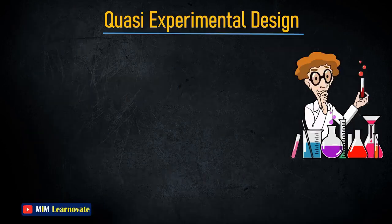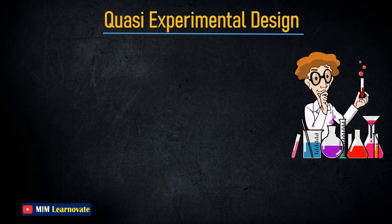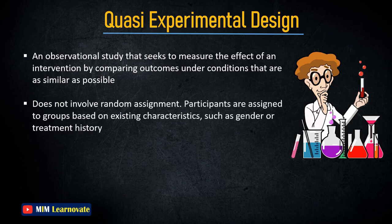What is a Quasi-Experimental Design? A quasi-experiment is an observational study that seeks to measure the effect of an intervention by comparing outcomes under conditions that are as similar as possible. A Quasi-Experimental Design does not involve random assignment. Instead, participants are assigned to groups based on existing characteristics such as gender or treatment history.